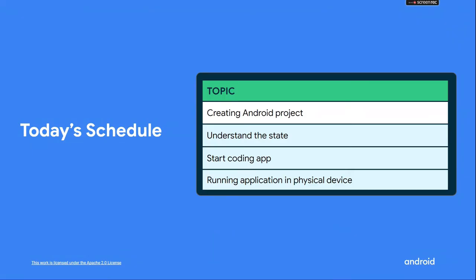Let's take a look at today's video outline. First, we're going to create our Android project for this dice roller application. Secondly, we'll understand the concept of state and how it works. Thirdly, we'll start coding our application and run it on an Android device.